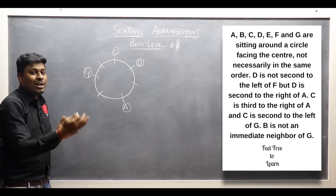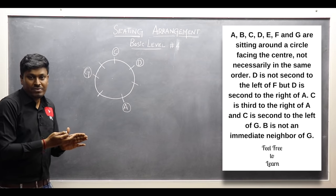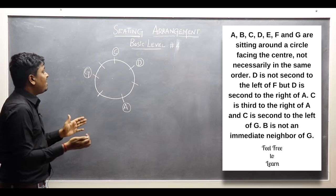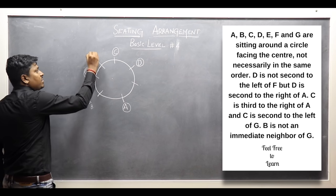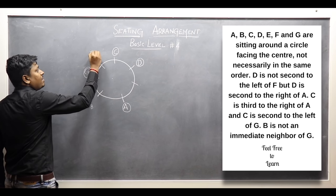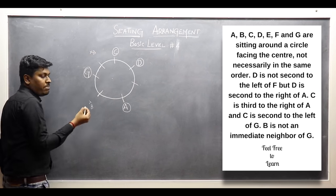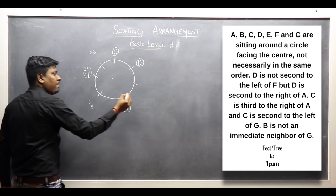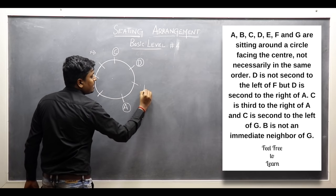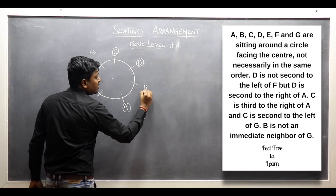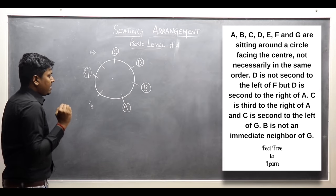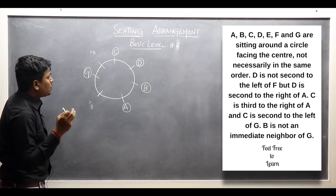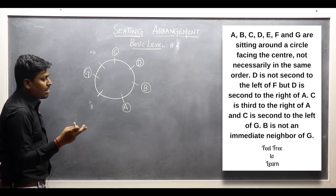Next: B is not an immediate neighbor of G. So I should not fix B in either of the two places immediately next to G. Those two places are not for B. Only one place is remaining, so definitely I should fix B there.